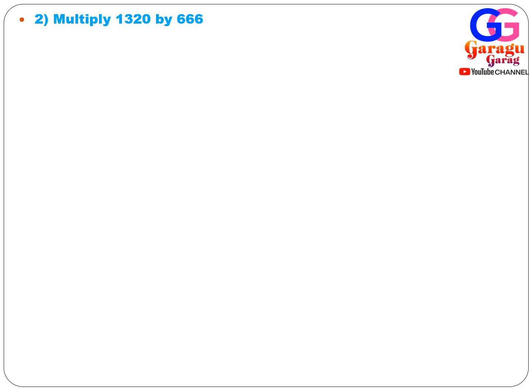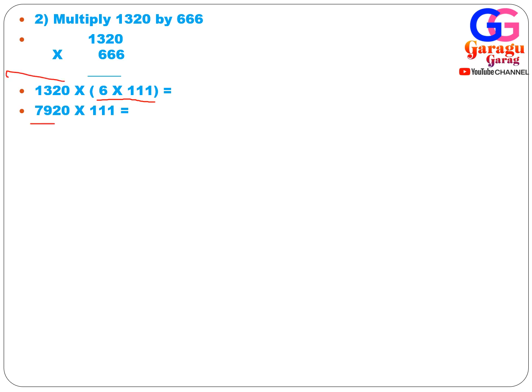Now let's multiply 1320 by 666. We convert 666 as 6 × 111. So 1320 × 666 becomes 1320 × 6 × 111, which equals 7920 × 111. There are three ones in 111, so we apply the technique.